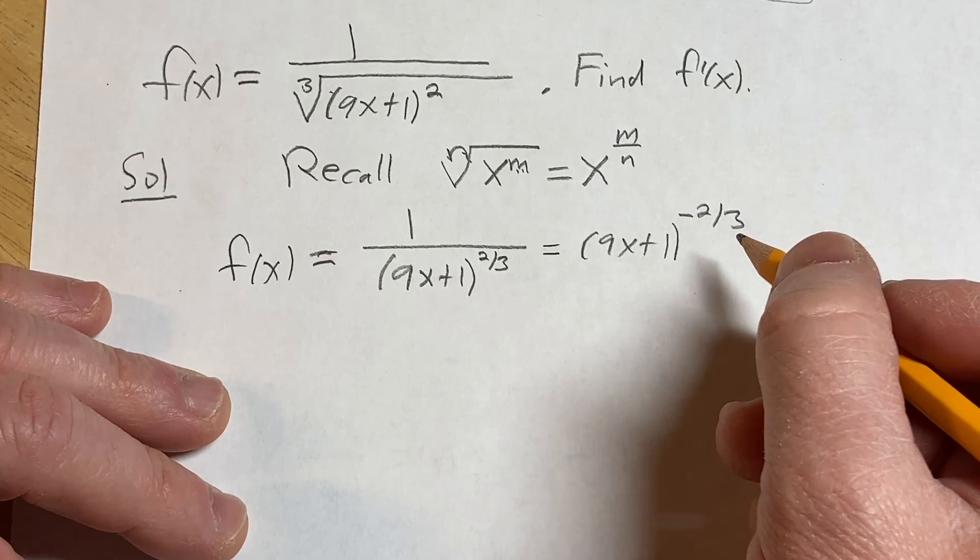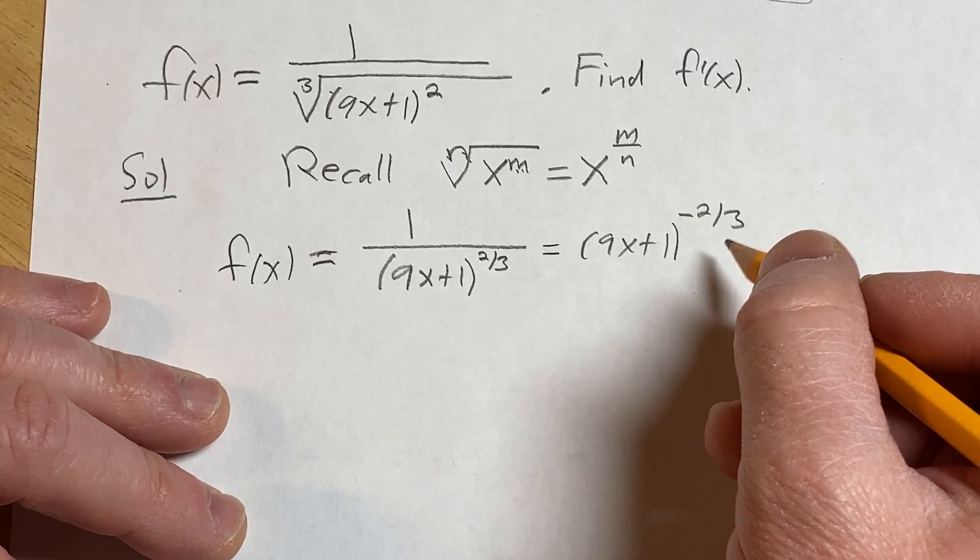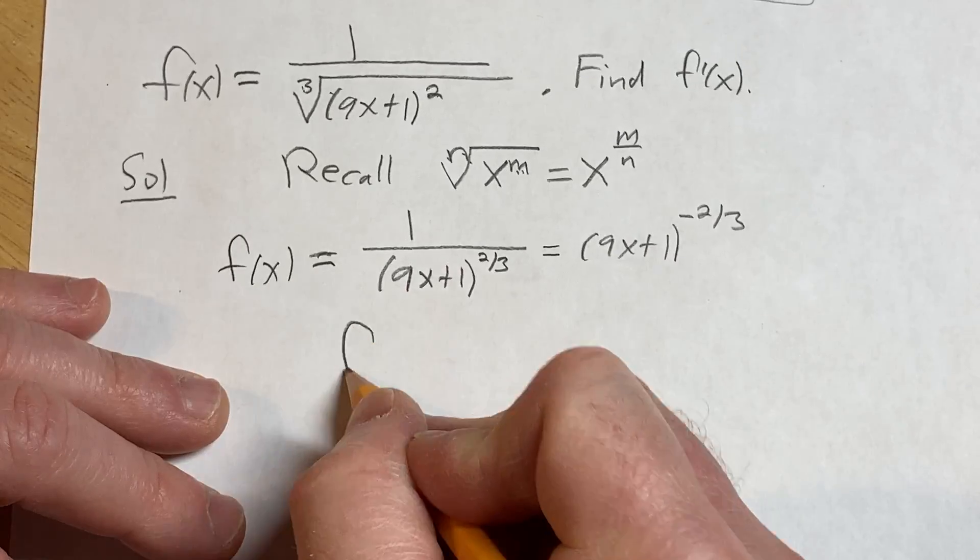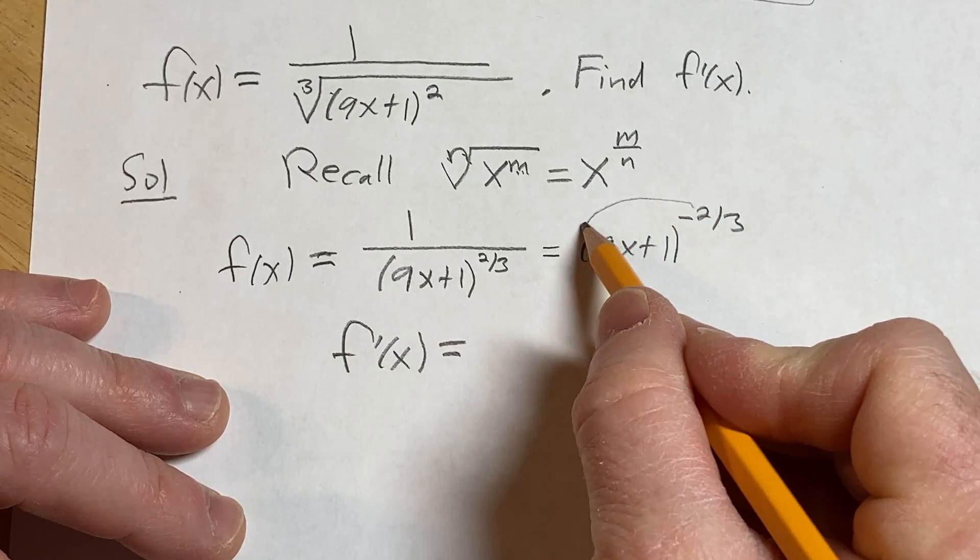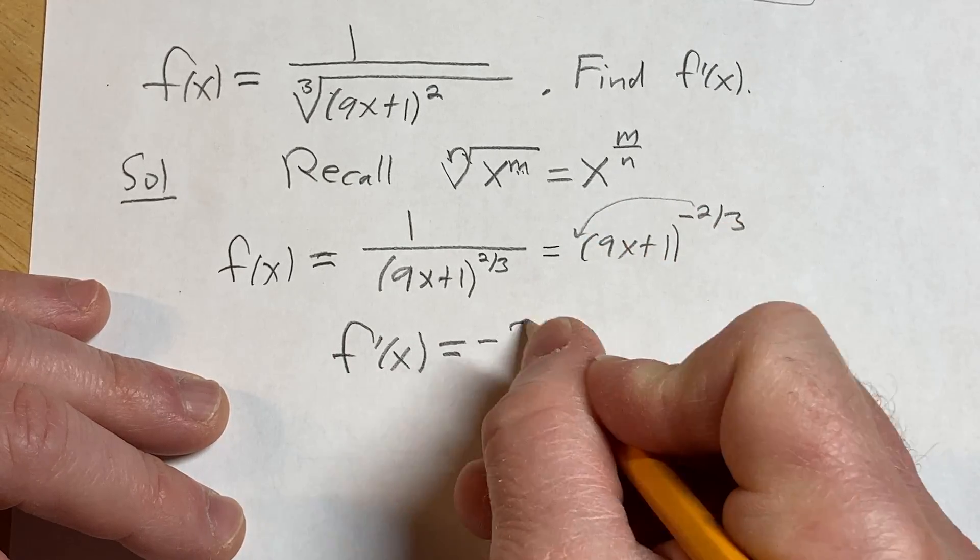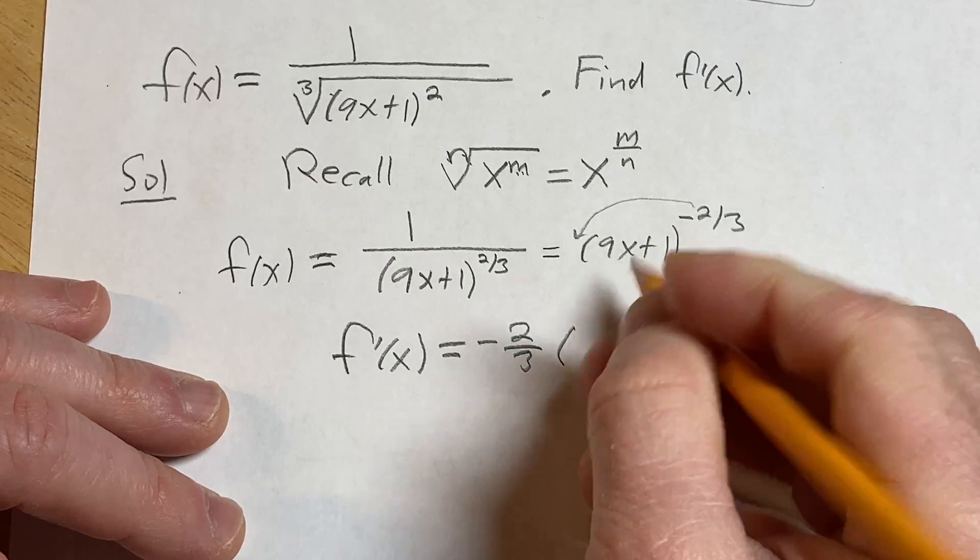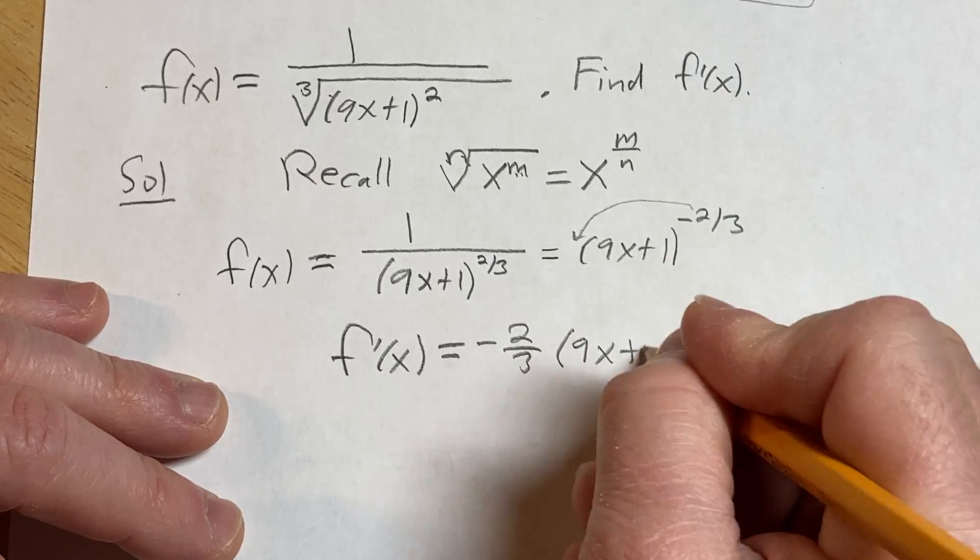Now we're ready to take the derivative. We'll use the chain rule because we have something to a power. So f'(x) equals... bring down that negative 2/3, leave the inside untouched: 9x+1.